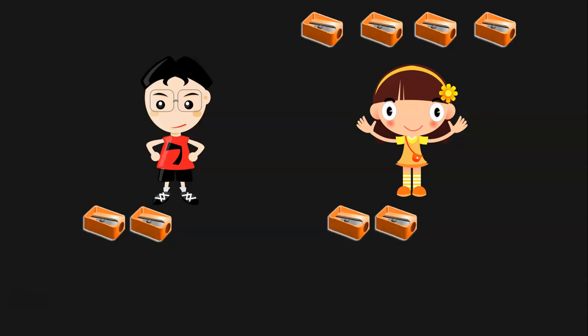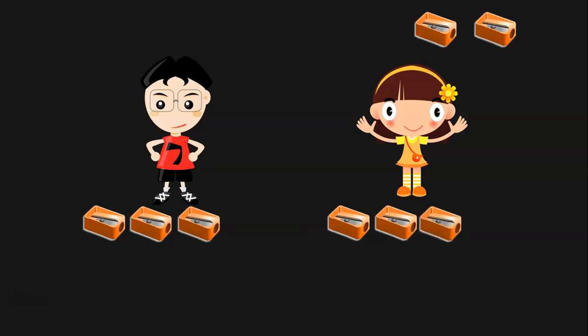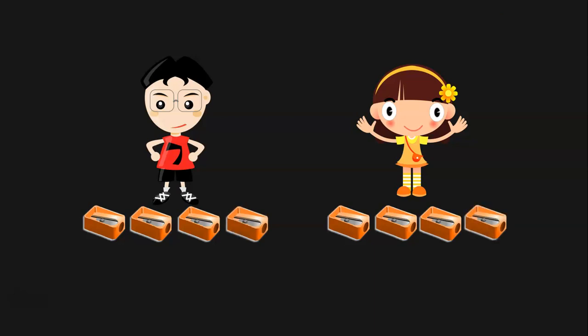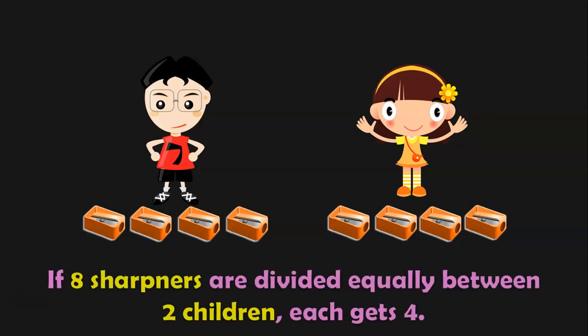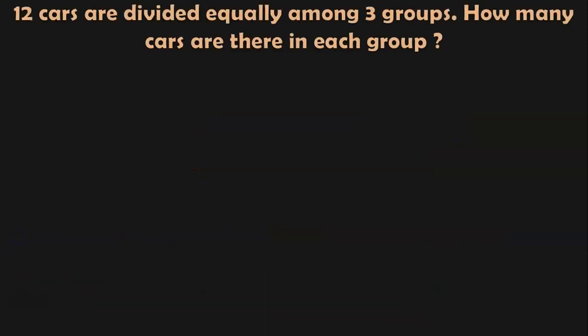Now move on to the next sharpener. Take it and give it to the boy. There are 3 more still. So take another sharpener and give it to the girl. You are still left with 2 more sharpeners which can be given — one to the boy and another to the girl. So how many sharpeners does each of them have now? 4. If 8 sharpeners are divided equally between 2 children, each gets 4. Let us see another example now.